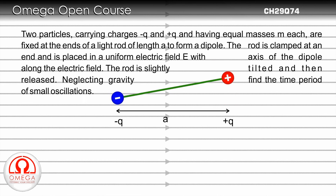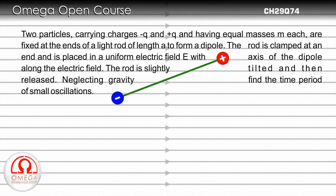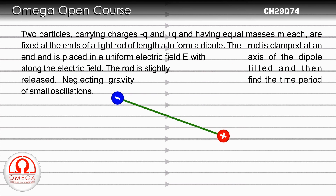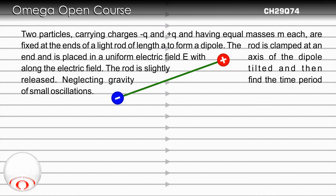The rod is slightly tilted and then released. Neglecting gravity, find the time period of the small oscillations.